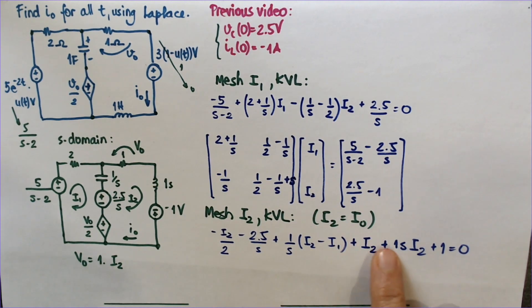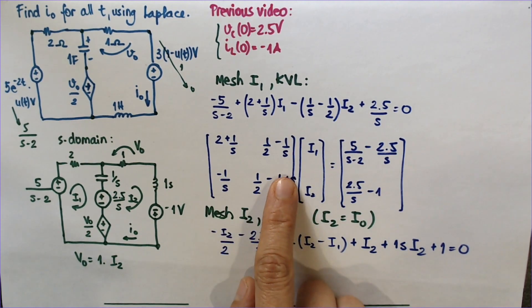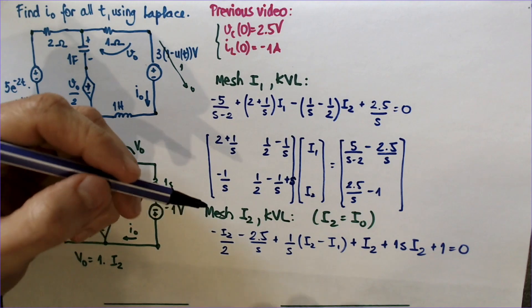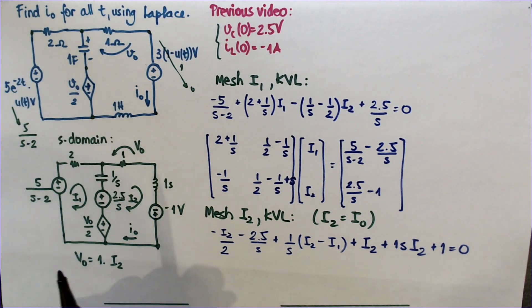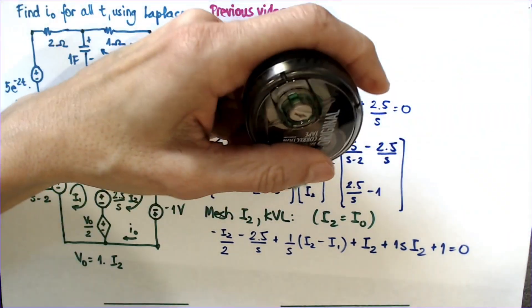So counting terms: 1, 2, 3, 4, 5, 6, 7. I must be missing one. Oh no, I merged the two numbers. I merged minus half plus 1, so it's six terms. So this is maybe a little bit nicer written. This plus s here could have been better.